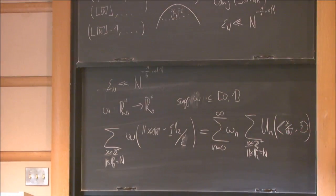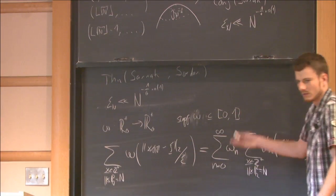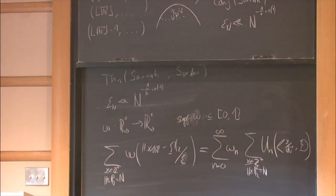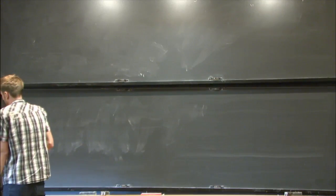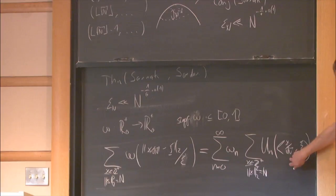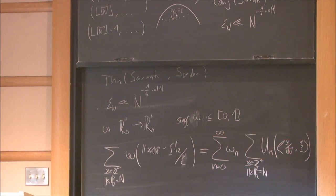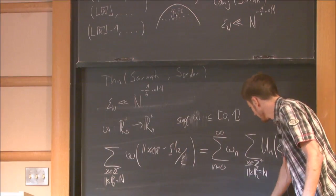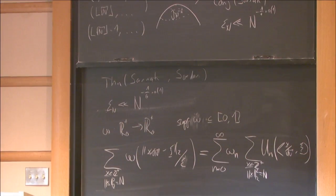Here, u_n are the Chebyshev polynomials of the second kind, which happen to be the spherical functions required for S3. The n equals 1 term is just the constant function and gives the main term, so we want to show the remaining terms are small. To understand this, we write the sum as a Fourier coefficient of some generating function.